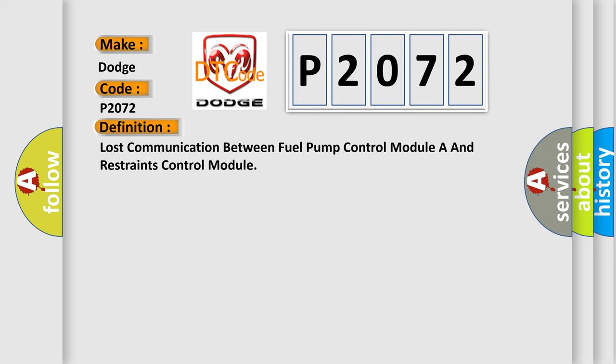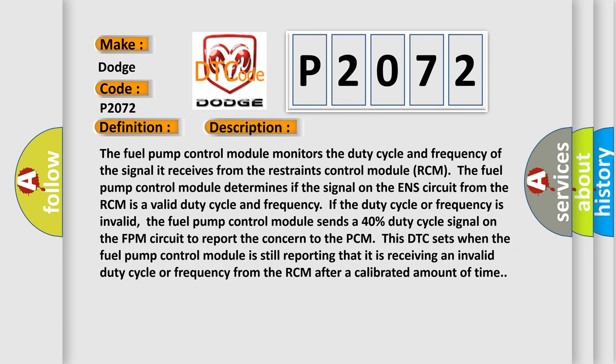Here is a short description of this DTC code. The fuel pump control module monitors the duty cycle and frequency of the signal it receives from the restraints control module (RCM). The fuel pump control module determines if the signal on the ENS circuit from the RCM is a valid duty cycle and frequency. If the duty cycle or frequency is invalid, the fuel pump control module sends a 40% duty cycle signal on the FPM circuit to report the concern to the PCM. This DTC sets when the fuel pump control module is still reporting an invalid duty cycle or frequency from the RCM after a calibrated amount of time.